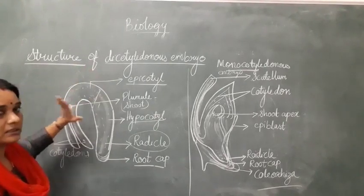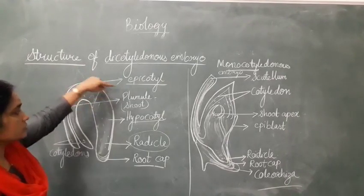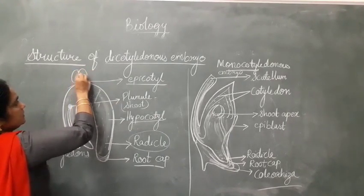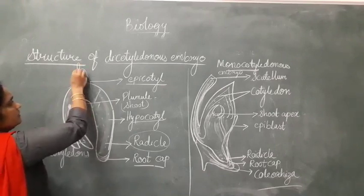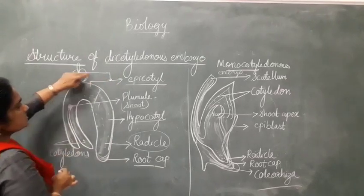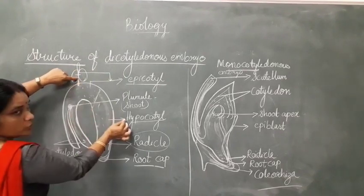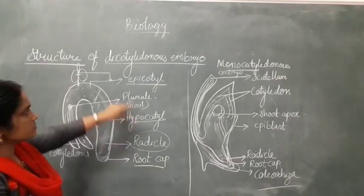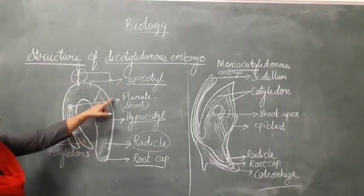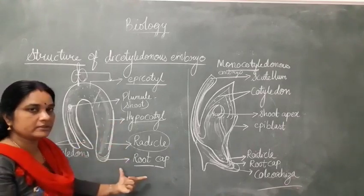Please draw the diagram in your notebook neatly and label the parts — that is very important. So this is like: you have the two cotyledons, the shoot system, and the root system. The embryonal axis: the part above is the epicotyl, then the plumule in the middle between the two cotyledons. Below the embryonal axis is the hypocotyl, and then below that is the radicle, which is covered by the root cap.